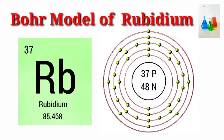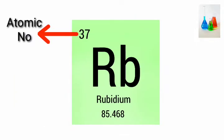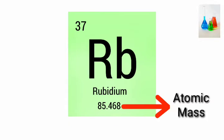Bohr model of rubidium. Atomic number 37. Atomic mass 85.468 atomic mass units.